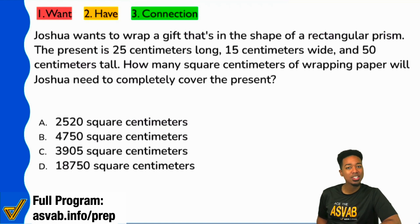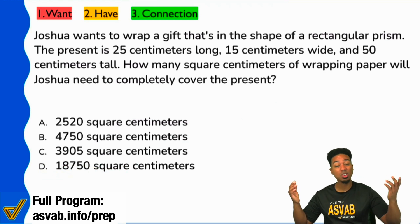Who here freaked out and said, man, coach, I saw that we got a rectangular prism, a 3D object. I got a 25, a 15, and a 50. I'm going to multiply all those numbers together and hope for the best. Who did that? 25 times 15 times 50. You ended up getting something like 18,750. Who was that?